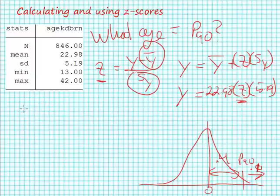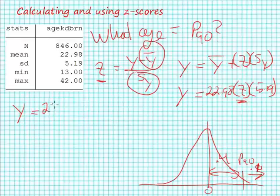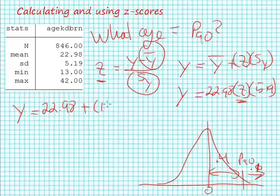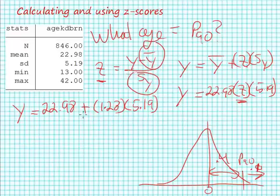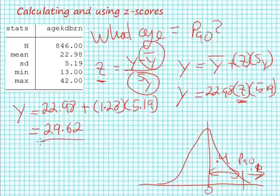Let's go ahead and solve this problem. Y is equal to 22.98 plus 1.28 times 5.19, which is going to equal 29.62.